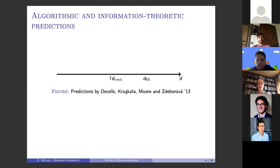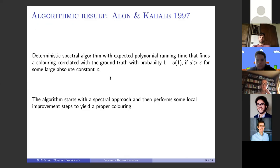There has been some previous work on this by Noga Alon and Nabil Kahale from the 90s. They give a deterministic spectral algorithm with expected polynomial running time that finds a coloring correlated to the ground truth with high probability if this average degree exceeds some large absolute constant, which is larger than q minus one squared, the Kesten-Stigum bound.